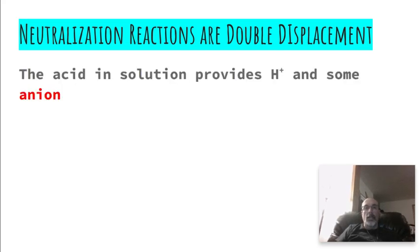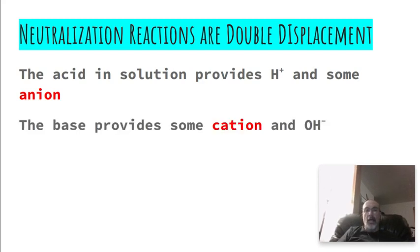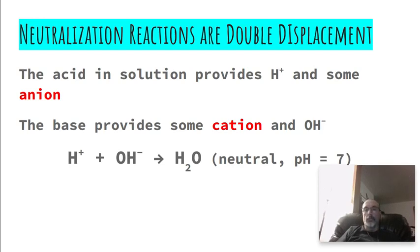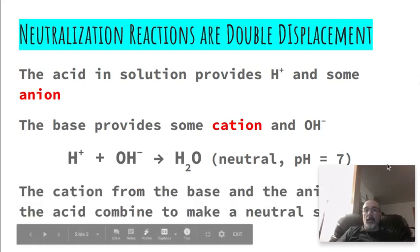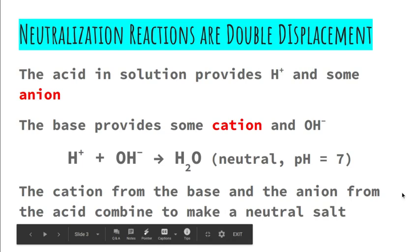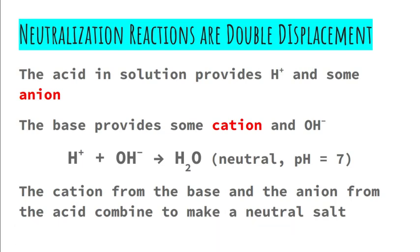The acid provides H+ and some anion, right? So hydrochloric acid: H+ and Cl- chloride, or sulfuric acid: H+ and sulfate SO4 2-. The base provides some cation like potassium or sodium or calcium or aluminum and hydroxide ions. And when you put hydrogen ions and hydroxide ions together, you get water which is neutral with a pH of 7. So the cation and the anion together combine to make that neutral salt.